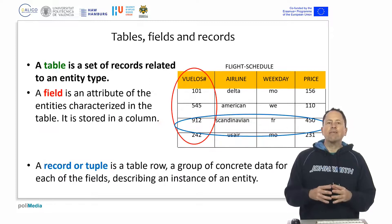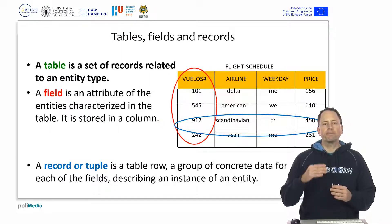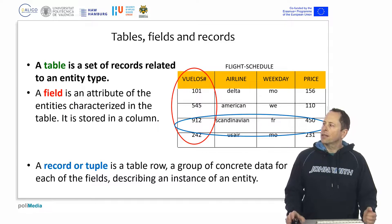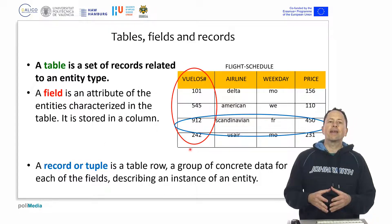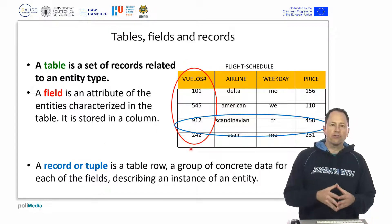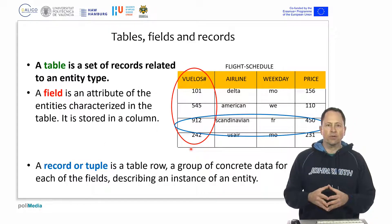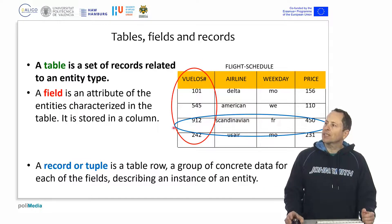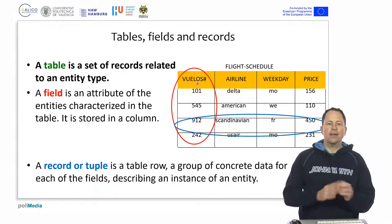The tables are organized in rows and columns. Tables are also called relations or files in this type of database. In the columns, we have what we call the fields. A field is an attribute of an entity.